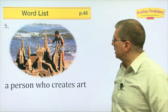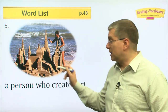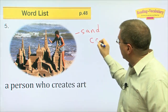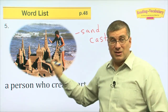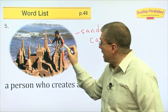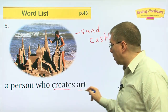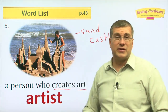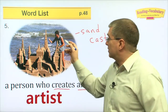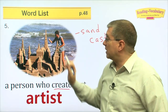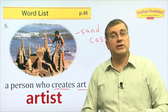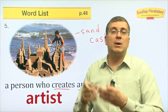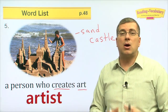Number five — wow, that's really cool. This guy's at the beach. Did you ever build something like this? This is a sand castle. This man is really good at creating art — we can call him an artist. Artists make many different things. This man is making a sand castle that looks like art. Artists also paint and make music. People who create things that we like and enjoy and that are beautiful — we call them artists.